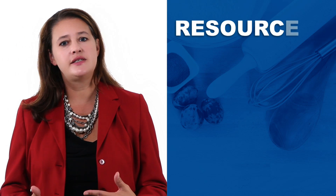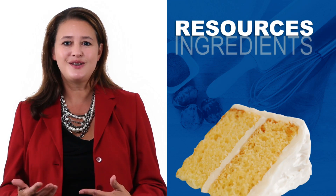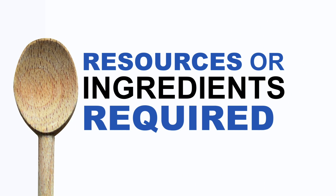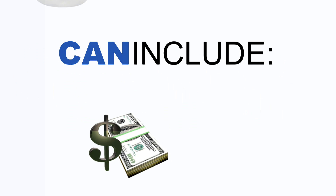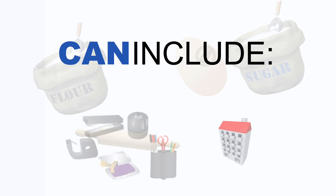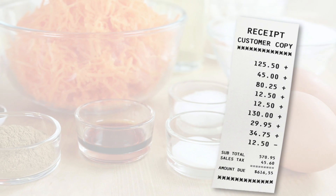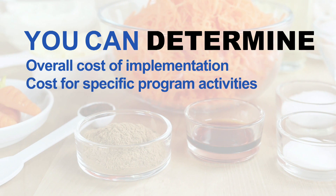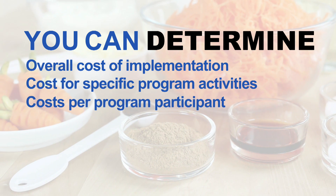Why is cost analysis so important? Think of these resources as ingredients that make up your program — like ingredients for making a cake. The resources or ingredients required to run the program can include staff salaries, time, facilities, materials, supplies, and vehicles. There is a cost or value that needs to be assigned to all these resources, which can be direct or indirect costs to the program. Once you have the cost of the ingredients, you can determine the overall cost of implementing the program, the cost for specific program activities, and cost per program participant. This information should help you make program decisions and can establish a foundation for other types of analyses.